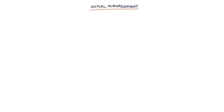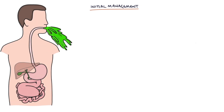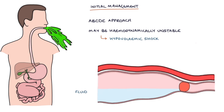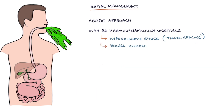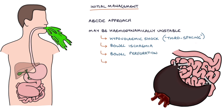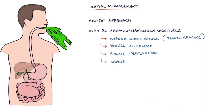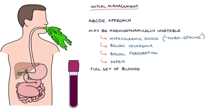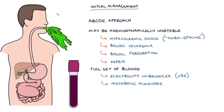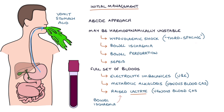As with any unwell patient, start with an ABCDE approach. Patients with bowel obstruction may be hemodynamically unstable and require urgent intervention if they've developed hypovolemic shock due to third spacing — fluid stuck in the bowel rather than the intravascular space. Watch for bowel ischemia, bowel perforation, or sepsis. A full set of bloods is required. Key things to look out for are electrolyte imbalances, metabolic alkalosis due to vomiting stomach acid on a venous blood gas, and raised lactate indicating bowel ischemia.